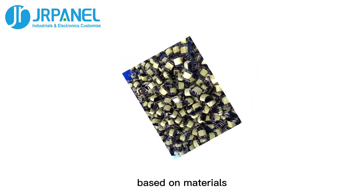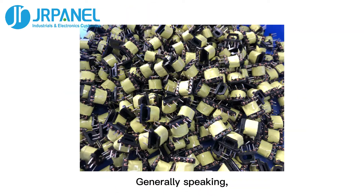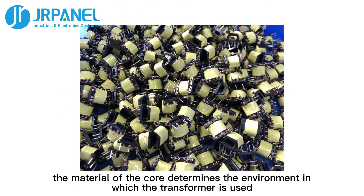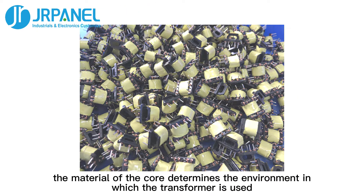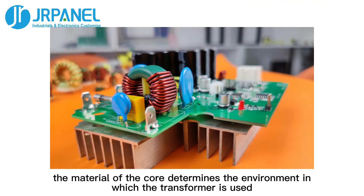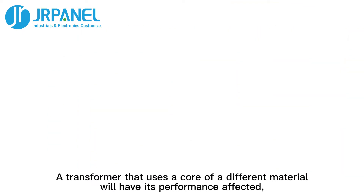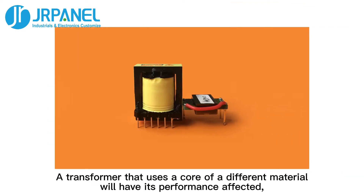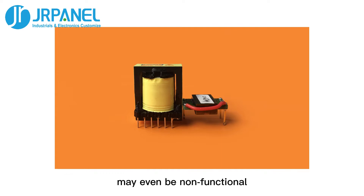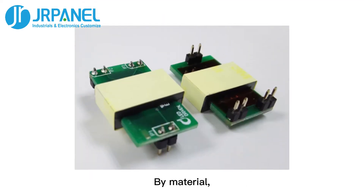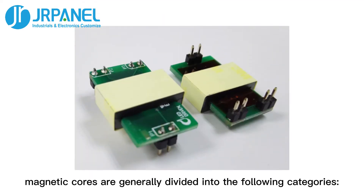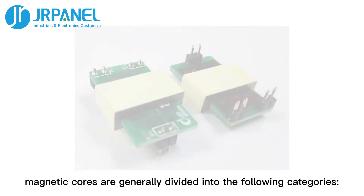Based on materials, generally speaking, the material of the core determines the environment in which the transformer is used. A transformer that uses a core of a different material will have its performance affected, and may even be non-functional. By material, magnetic cores are generally divided into the following categories.